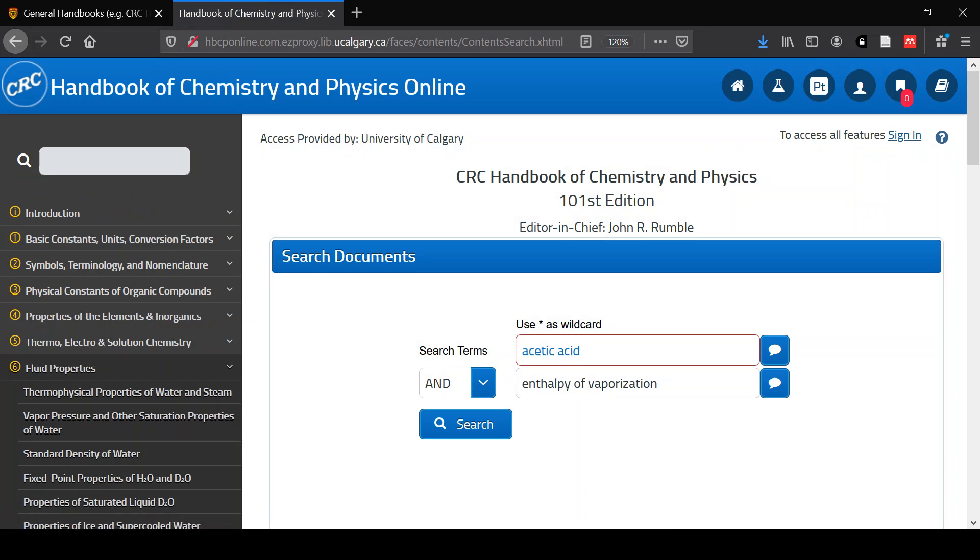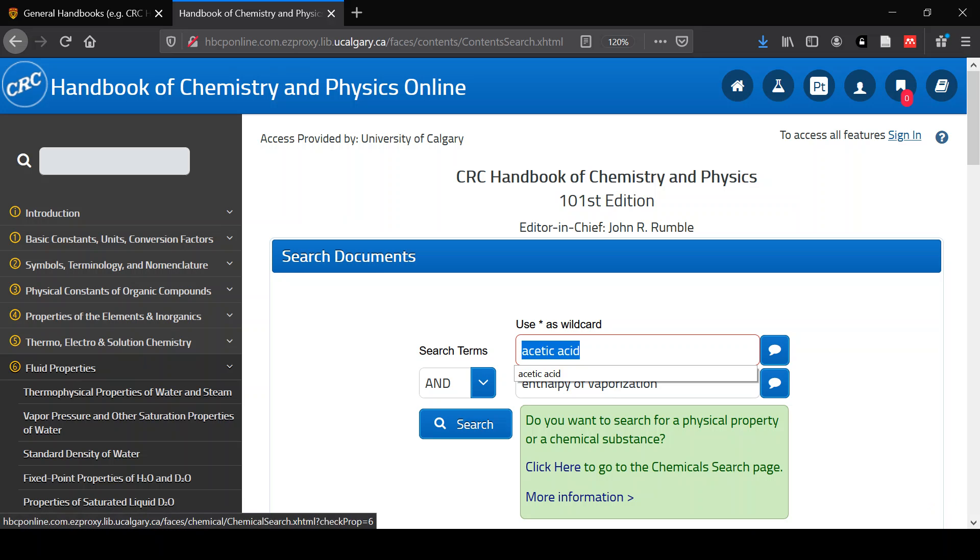Another way that you can get at the information is by searching through a text search. You basically just type in what you're looking for and it'll look for it as text. However, you should know that when you're searching for this, it is looking through all of the full text of the whole book. So if acetic acid and enthalpy of vaporization is mentioned in an introduction or something like that, that will come up.